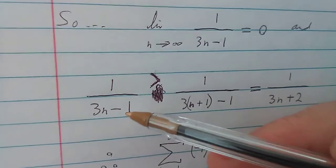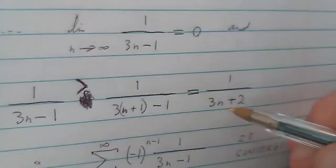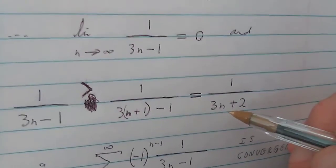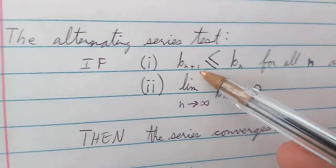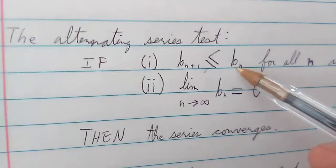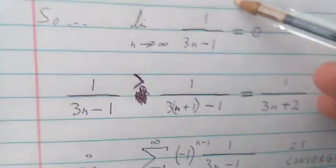This one, the n term is bigger than the n plus 1 term. So the b_{n+1} is still less than or equal to b_n. Close enough.